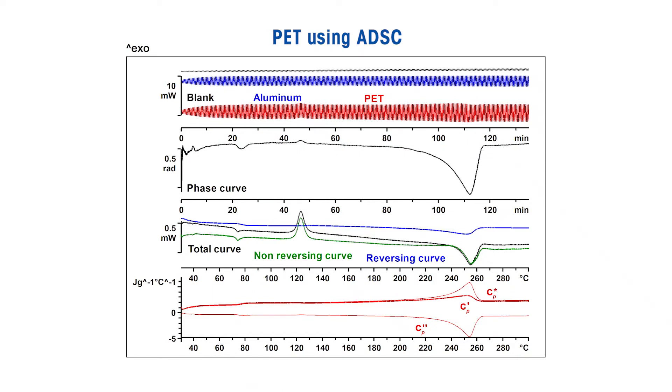Starting from the top, this evaluation shows a blank curve, calibration with aluminum and PET sample curves. The ADSC evaluation computes a phase curve, total reversing and non-reversing sample curves, and the complex heat capacity curve. The enthalpy relaxation is observed in the non-reversing and total heat flow curves. The reversing curve shows the glass transition without an enthalpy relaxation peak. The peak due to cold crystallization is only observed in the non-reversing and total heat flow curves.